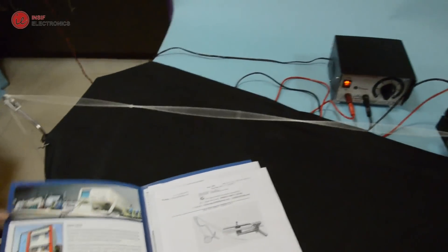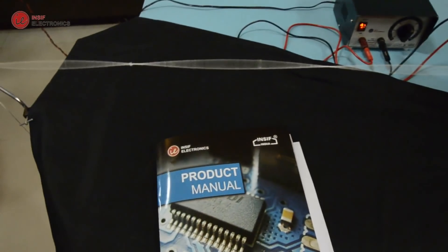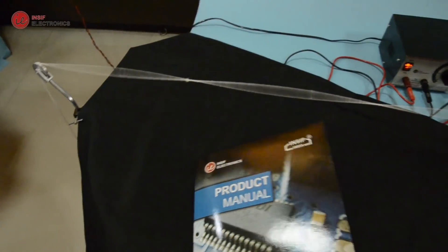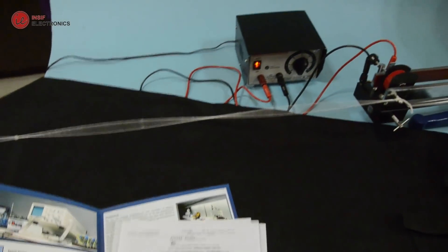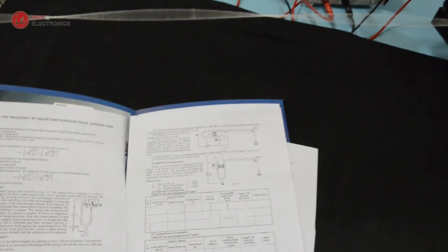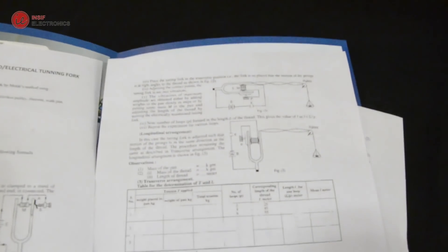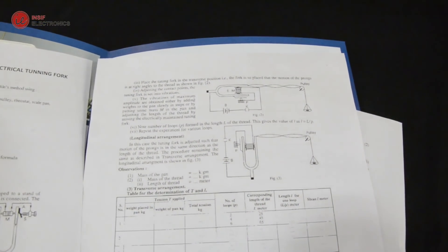And now you can calculate the frequency by placing the values of number of loops, mass per unit length of thread, and the mass of weights along with pan. Finally, check the practical value with the theoretical value. Thank you for watching.